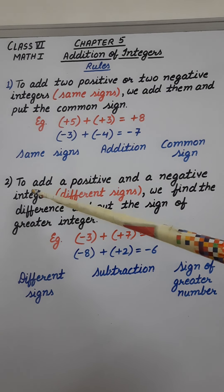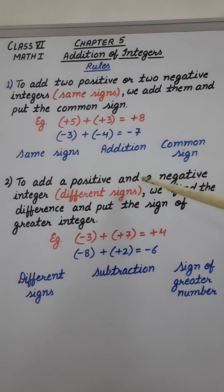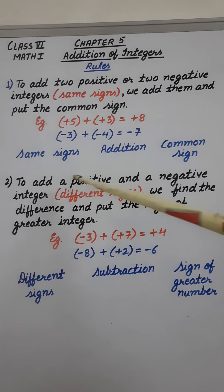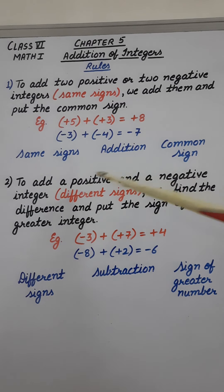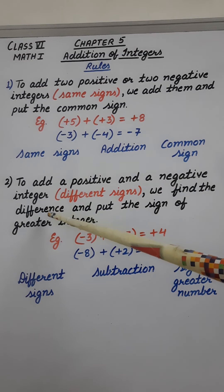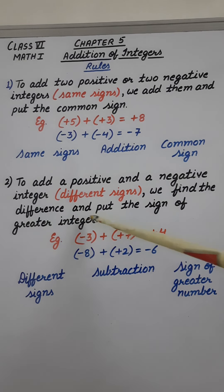Now the second rule is to add a positive and a negative integer — meaning two integers with different signs. We find the difference and put the sign of the greater integer.